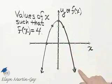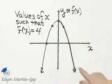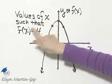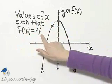Here's the graph of f of x, or the graph of f. We want to find the values of x such that f of x is 4.